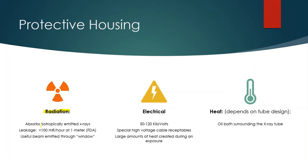The protective housing is there to limit leakage radiation. Radiation travels isotropically, meaning it travels in all directions away from the source — similar to dropping a pebble into a pond and watching ripples move outward. The electromagnetic energy, even though it travels at light speed, travels in wave form away from the source. The goal of the protective housing is to limit leakage radiation to less than 100 millirad per hour at one meter from the source. This is an FDA regulation, and the useful beam is emitted through the window.